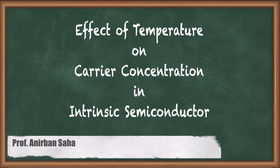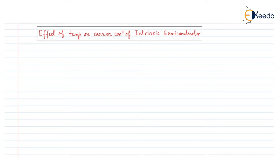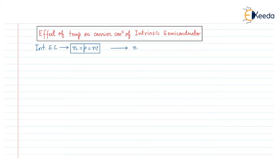In this video we are going to discuss the effect of temperature on carrier concentration of an intrinsic semiconductor. For an intrinsic semiconductor, the electron concentration N equals the hole concentration P, and both equal the intrinsic carrier concentration Ni. The intrinsic carrier concentration Ni is proportional to T to the power P by 2.